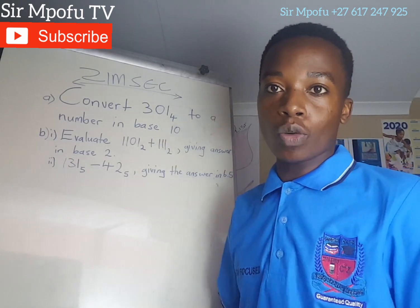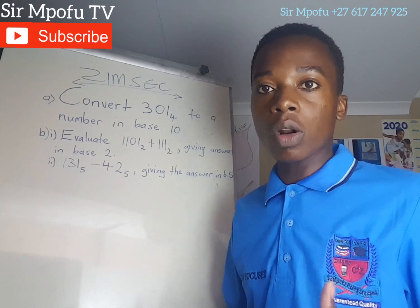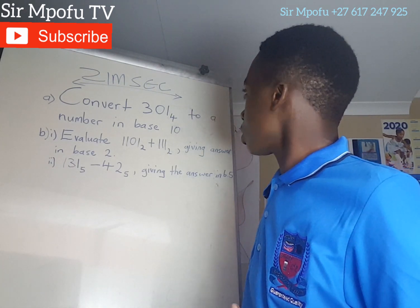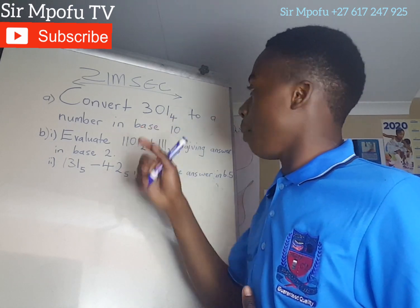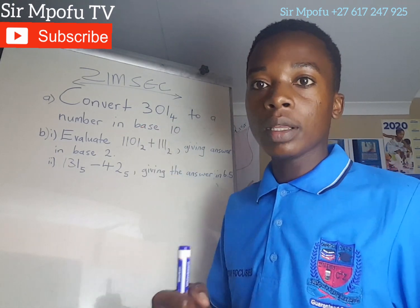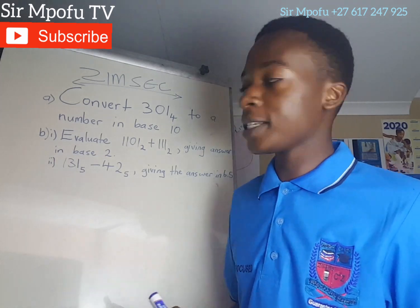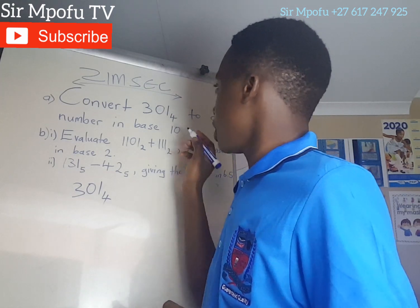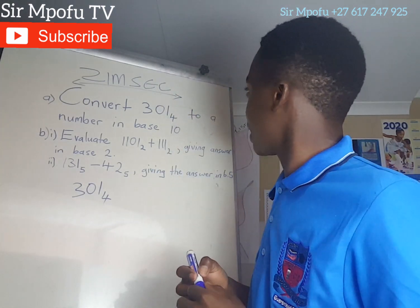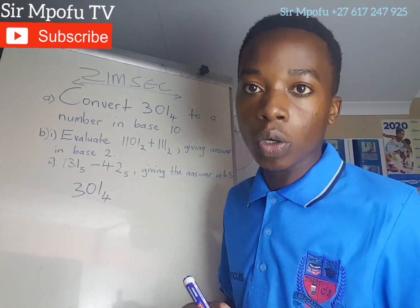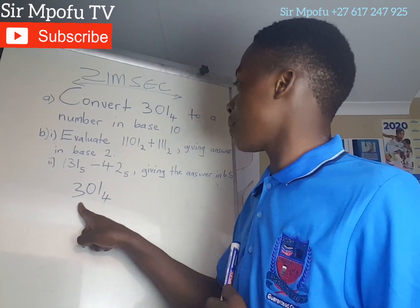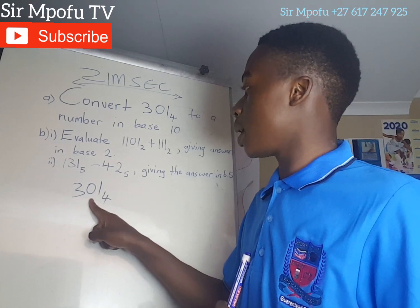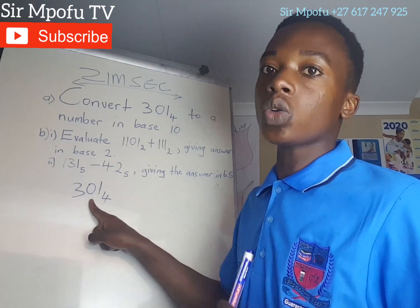For the first one, you can change this number to base 10 by using the short method, which is the fastest method. 301 in base 4. So, 4 times 3 is 12. 12 plus 0 gives you 12.